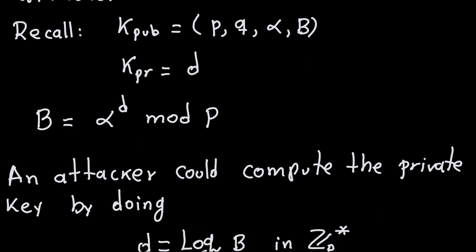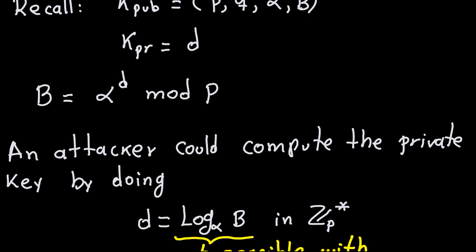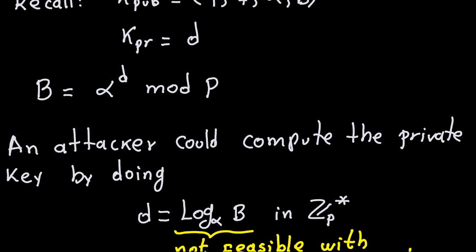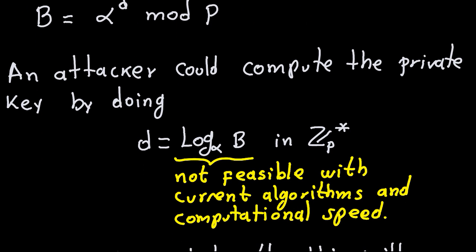So that's the first attack. The attacker could compute the private key D by computing the discrete log of base alpha of B, all in the group Z_P*. This will not be feasible currently because the prime P is quite long — 1024 bits — so it's not feasible with current algorithms and computational speed. That doesn't mean it won't be feasible in the future, but for now it is not feasible.